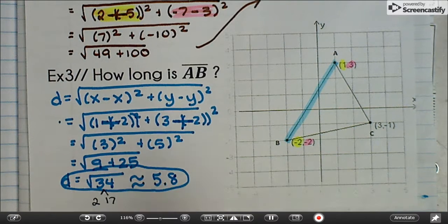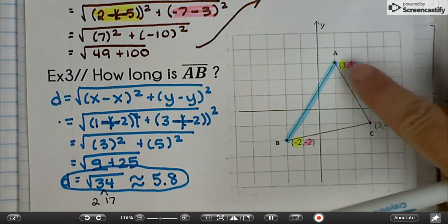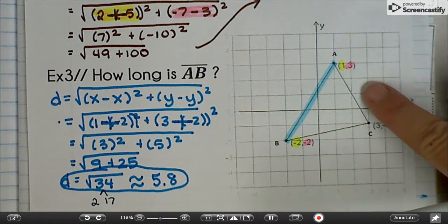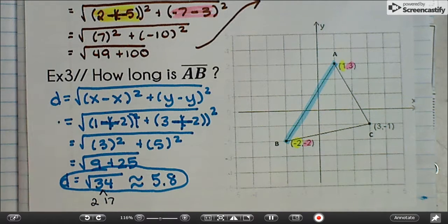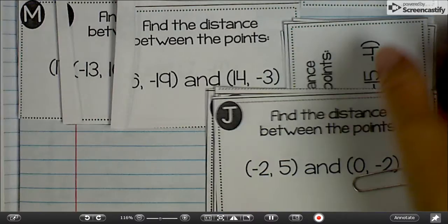And it equals approximately 5.8. If I asked you for the perimeter of triangle ABC, you would find the distance of all three sides. So you'd do this three times. And then you would add them together. But I'm not asking you to do that. All right. Last few questions.